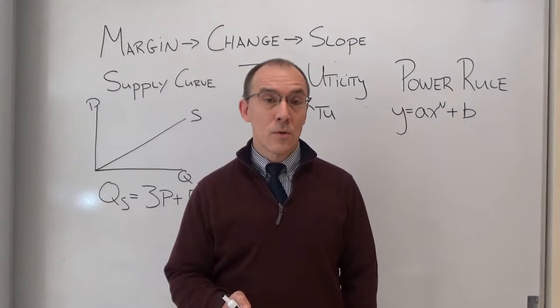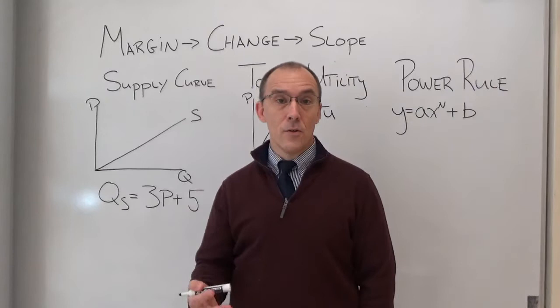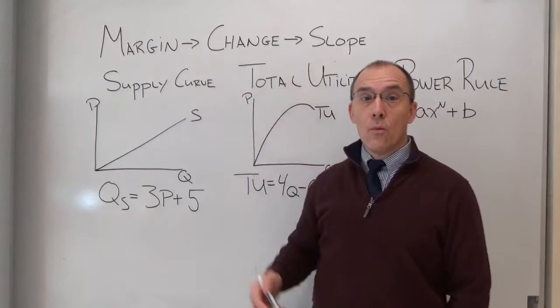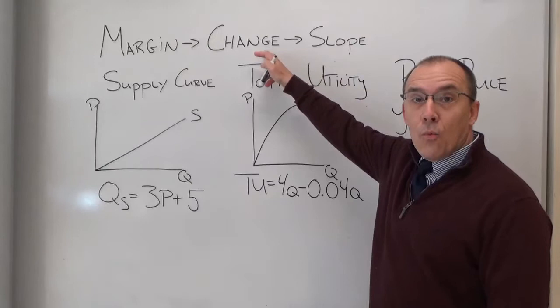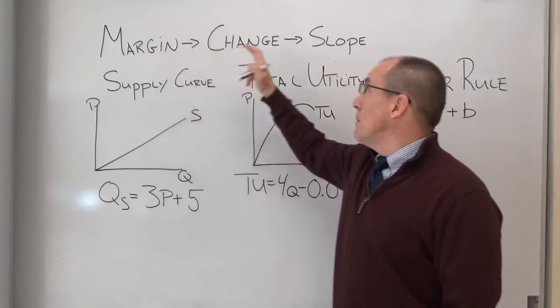First thing we're going to do is look at terms. Typically in economics we use the term margin all the time. We've talked about marginal utility, we'll talk about marginal costs, marginal revenue. Whenever we use the word margin we're talking about what happens next. A better way to think about margin is to think about the word change. What we're often looking at is how one thing changes in response to the change in something else. Now mathematically when we talk about change, the word we're actually using is slope. So while economists are talking about things happening at the margin, mathematicians basically use the same concept when they're talking about the slope of a line.